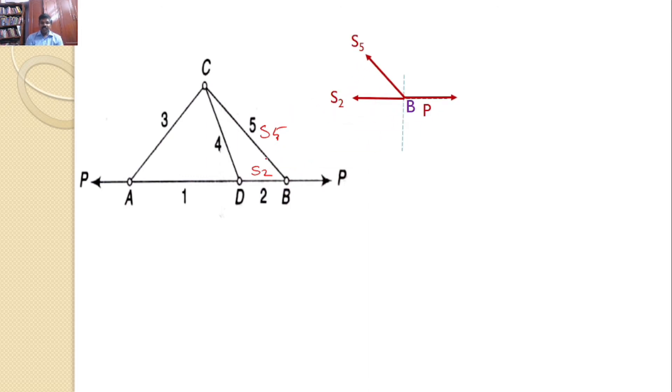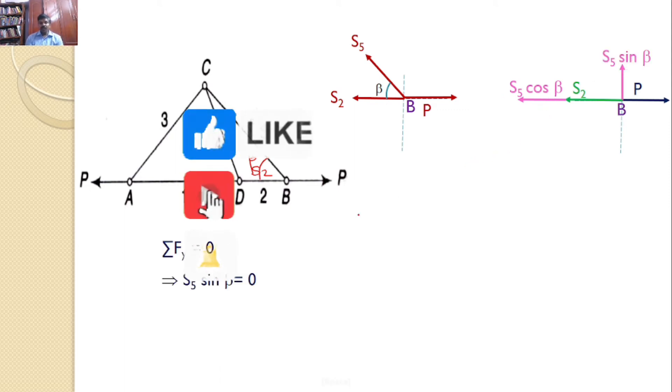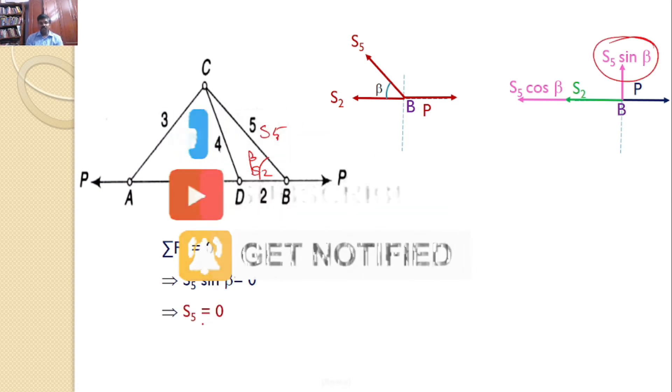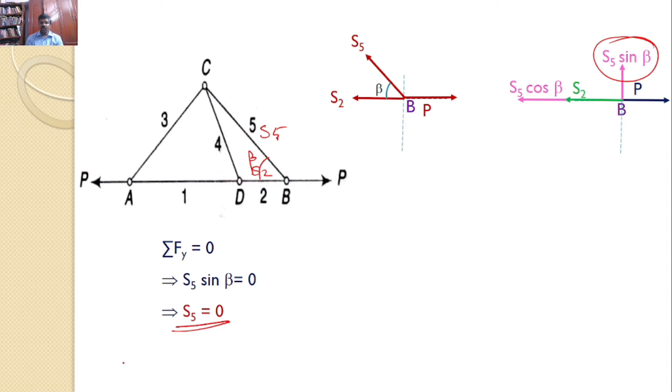Let us assume that S5 makes an angle beta with the horizontal. We can resolve S5 along X axis and Y axis. So the horizontal component is S5 cos theta, vertical component S5 sin theta. By using sigma Fy equals 0, we can say S5 sin theta equals 0, or S5 equals 0.